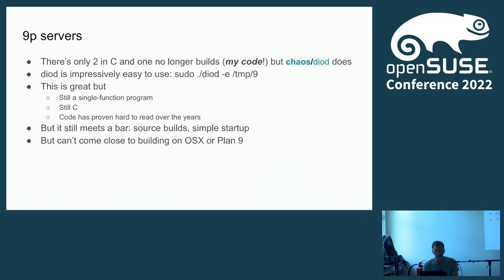For 9P servers, there are only really two decent ones in C. I wrote one of them a long time ago, and to my surprise, it no longer builds — which is a pretty common experience with C code. There's a very good one from Lawrence Livermore National Labs called Diode. Diode does build and is impressively easy to use: just run 'sudo ./diode -i' with a directory and it serves 9P2000.L on that directory. The only problem from my point of view is it's a single-function program that just does 9P, it's written in C, and I've been done with C for quite a few years. And it's not going to work on OS X or Plan 9.